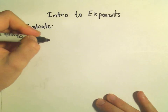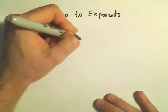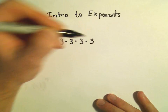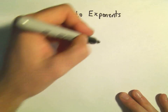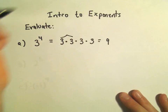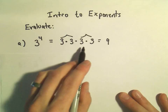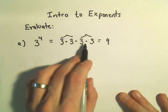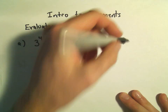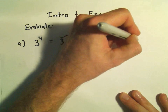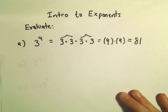So, 3 to the 4th — what does that mean? Well, it means we have 3 times 3 times 3 times 3, a total of 4 times. If you multiply the first two numbers together, 3 times 3 gives us 9. Likewise, the last pair of 3s gives us another 9. And 9 times 9 is simply going to be equal to 81. So 3 to the 4th power is another way to write the number 81.